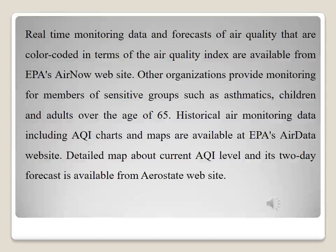Real-time monitoring data and forecasts of air quality, color-coded in terms of AQI, are available from the Environmental Protection Agency's AirNow website. Other organizations provide monitoring for sensitive groups such as asthmatic children and adults over the age of 65. Historical air monitoring data including AQI charts and maps are available at the EPA's Air Data website. A detailed map of current AQI levels and its two-day forecast is also available from the AirNow State website.